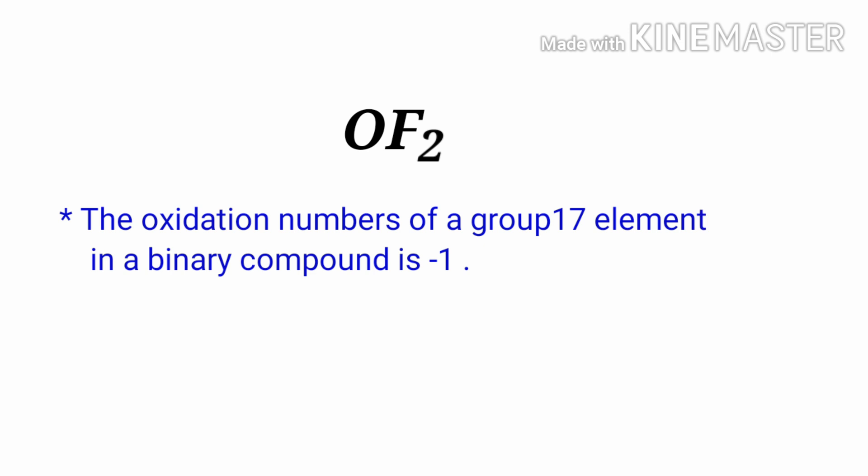By the rules of assigning oxidation numbers, the oxidation number of a group 17 element in a binary compound is minus one. Fluorine is a group 17 element, so the oxidation number of fluorine is minus one.